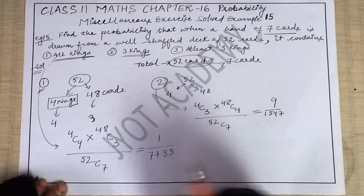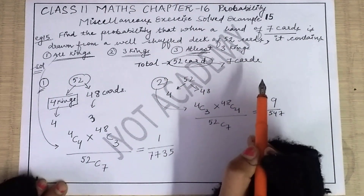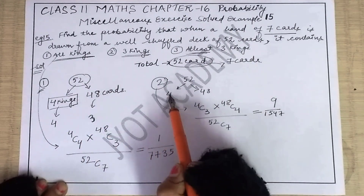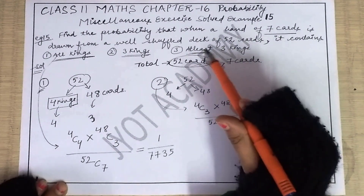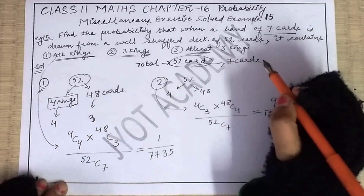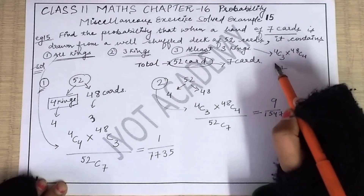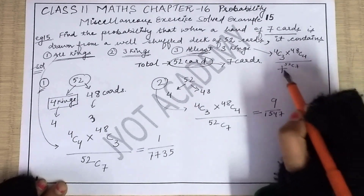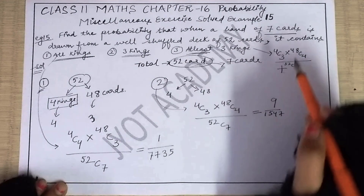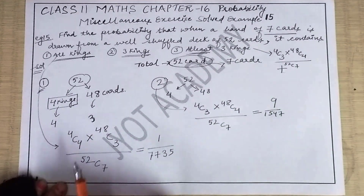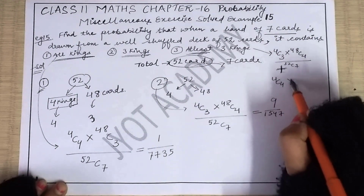Third part: at least three kings, meaning minimum three kings must be there, and more is also possible. Maximum is four kings since there are only four in the deck. So there will be two cases: one with exactly three kings and one with exactly four kings (the maximum). The answer is: (4C3 × 48C4 + 4C4 × 48C3) divided by 52C7. The first case is the same as condition 2, and the second case is the same as condition 1.